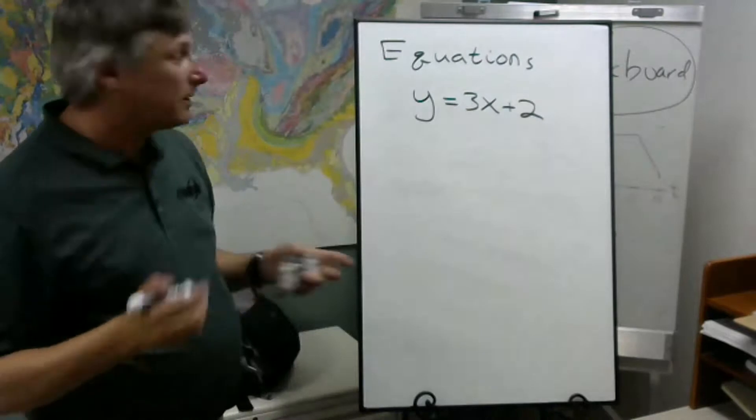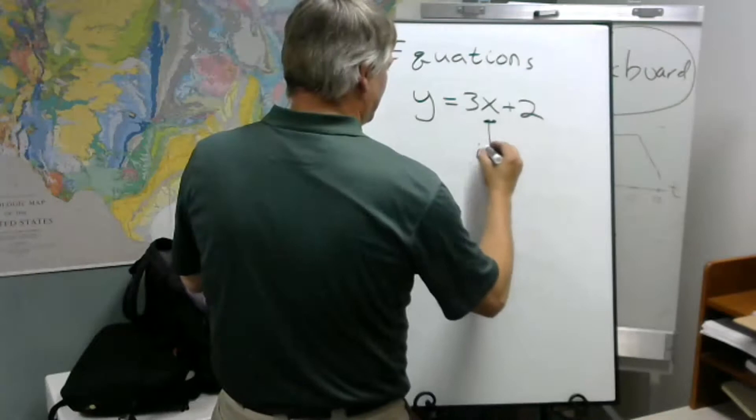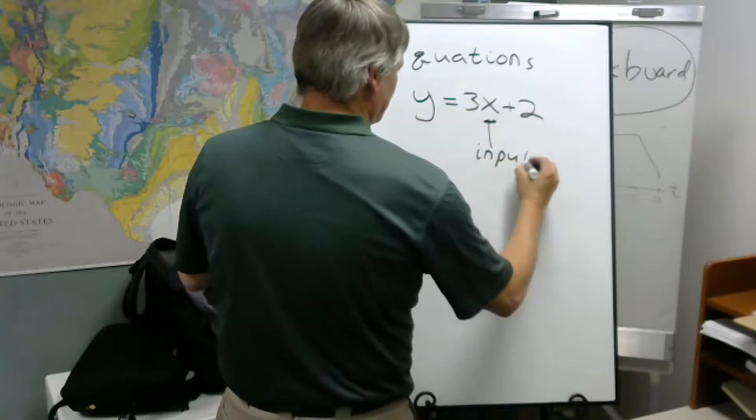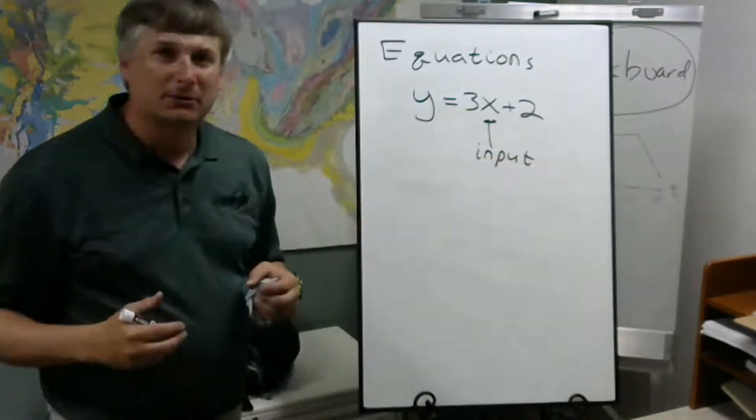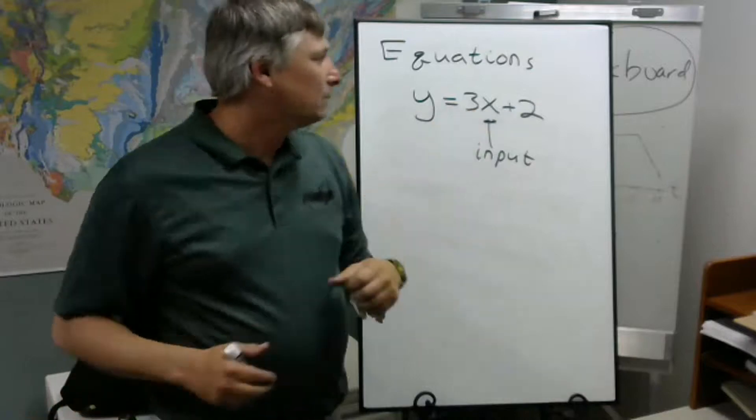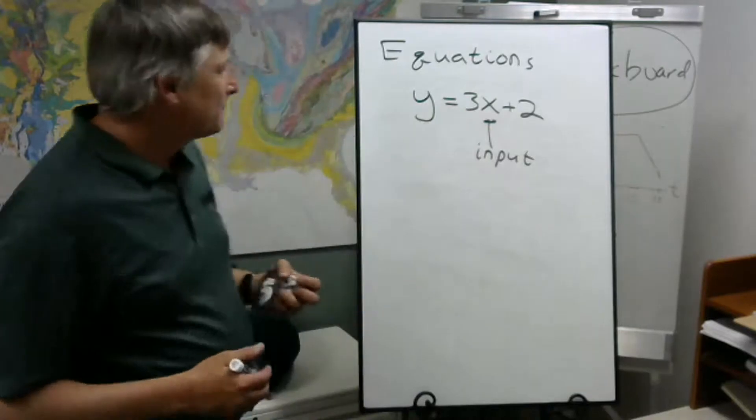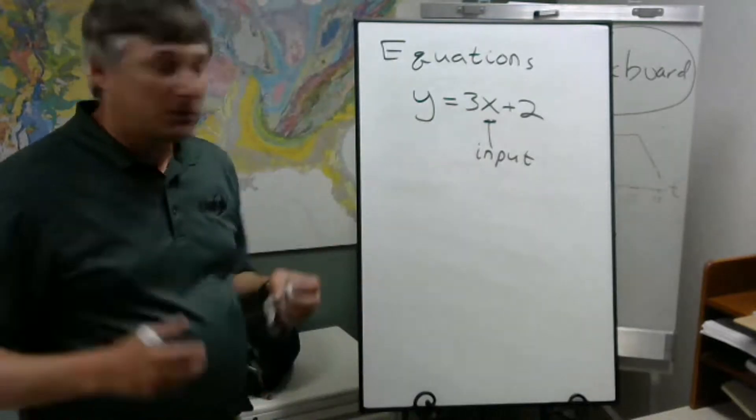Well, what's going on here? We have an input X. You put a number for X, choose 10 to get 3 times 10, which is 30. We add 2, we've got 32. So the output is going to be 32.